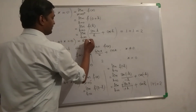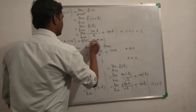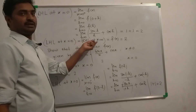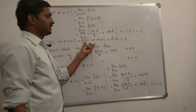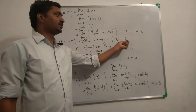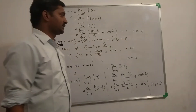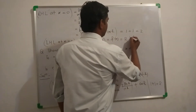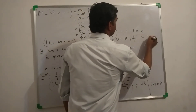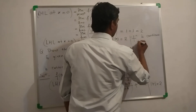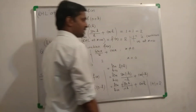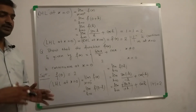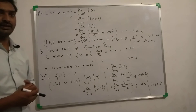Now we can see that LHL at x = 0 equals RHL at x = 0 equals the value of function f(0), and all are equal to 2. Hence, clearly LHL = RHL = value of function at 0. Therefore, the function is continuous at x = 0. We will solve more questions in the next lecture. You can also try related questions. Thank you so much.